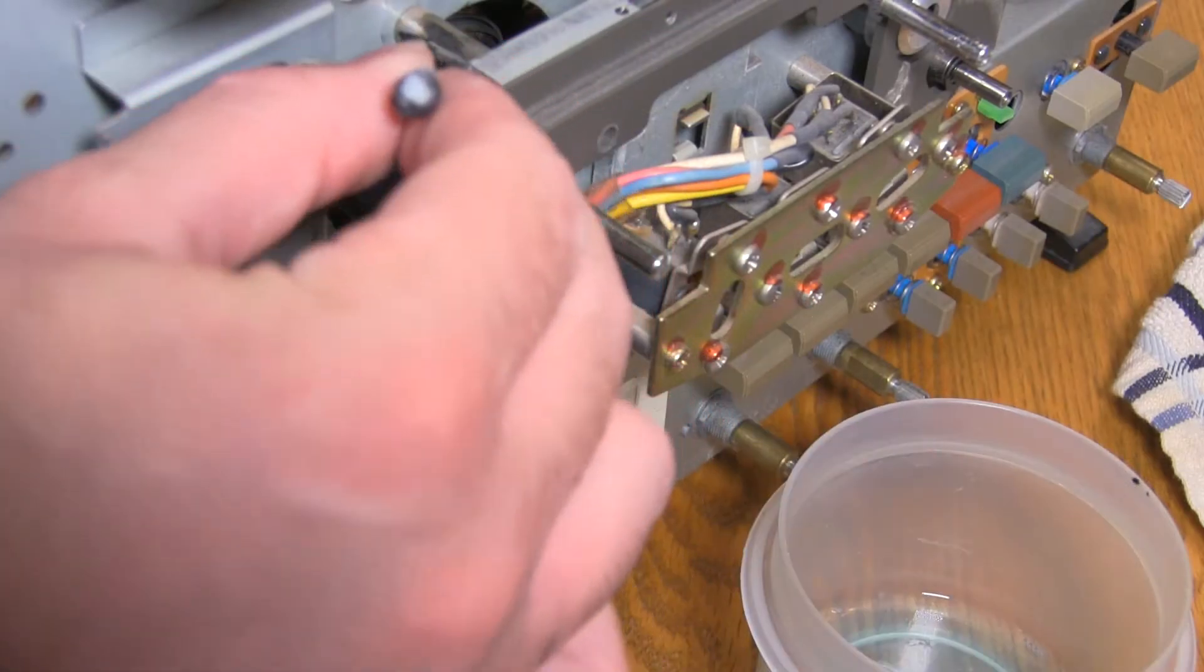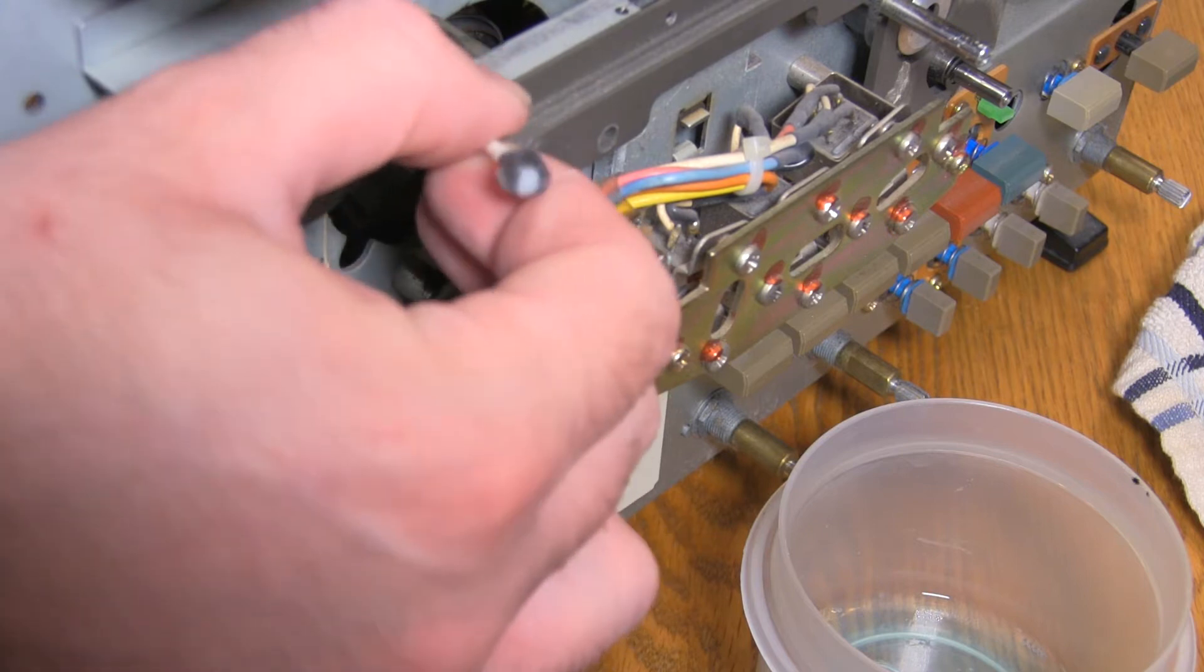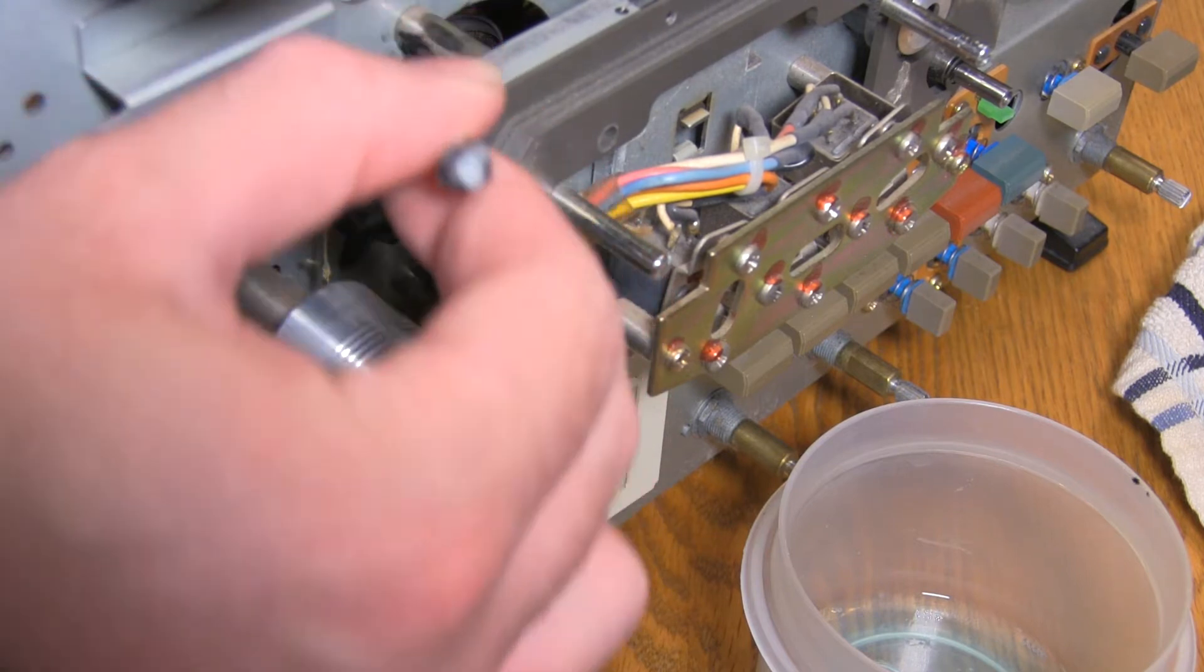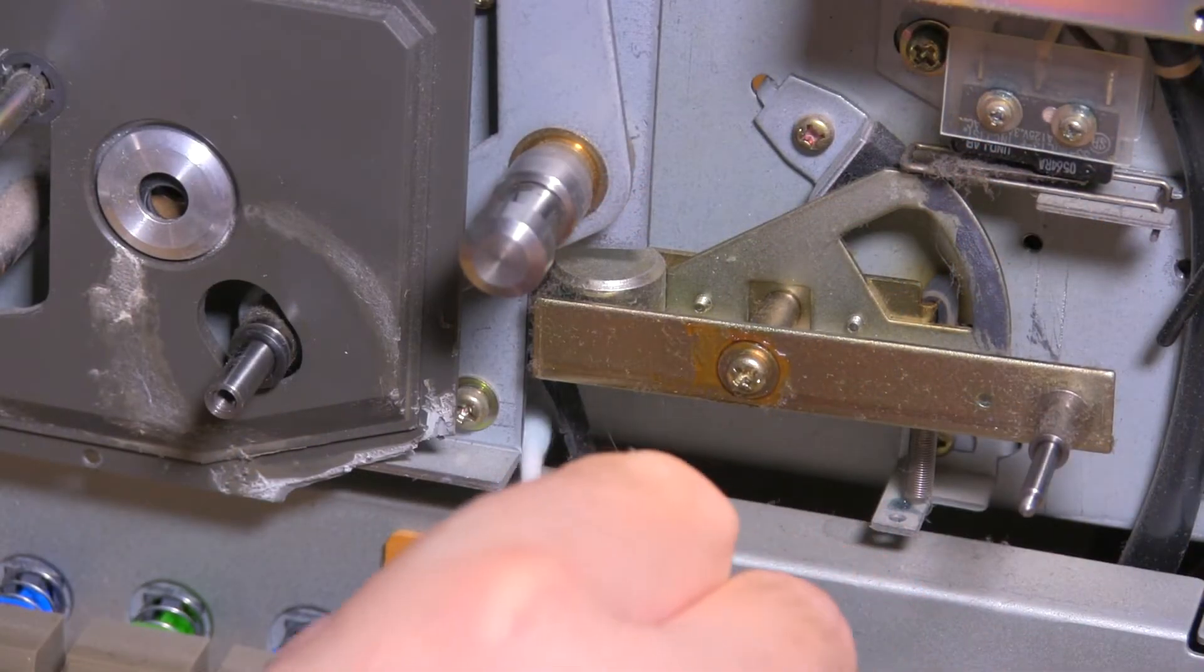There's bits of gunk on these support structures here. So instead of dismantling the entire machine, I'm just dipping cotton swabs in this window cleaner and rubbing off the residue. This part is going to suck.